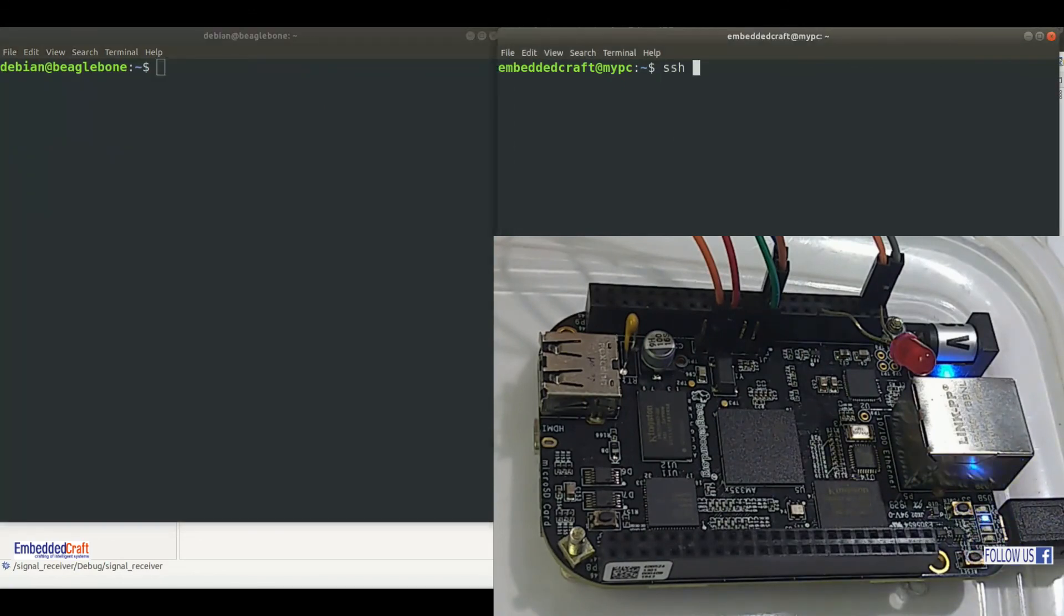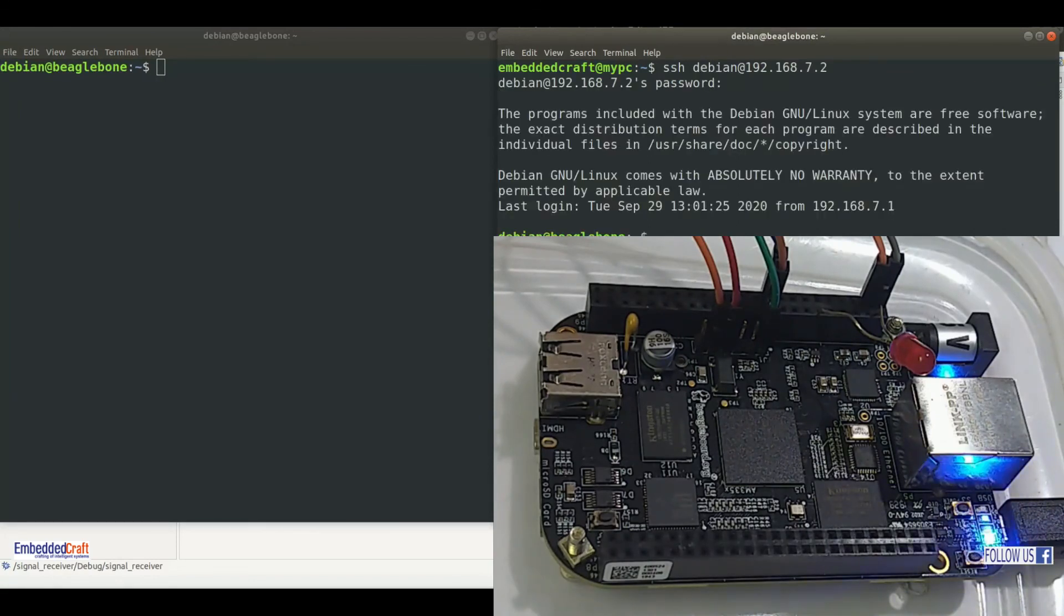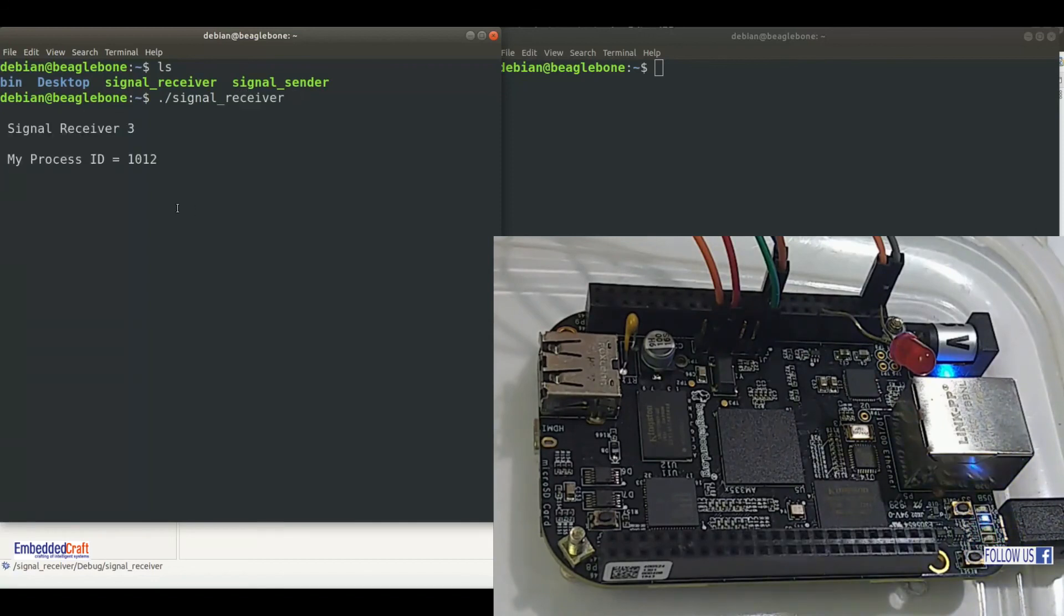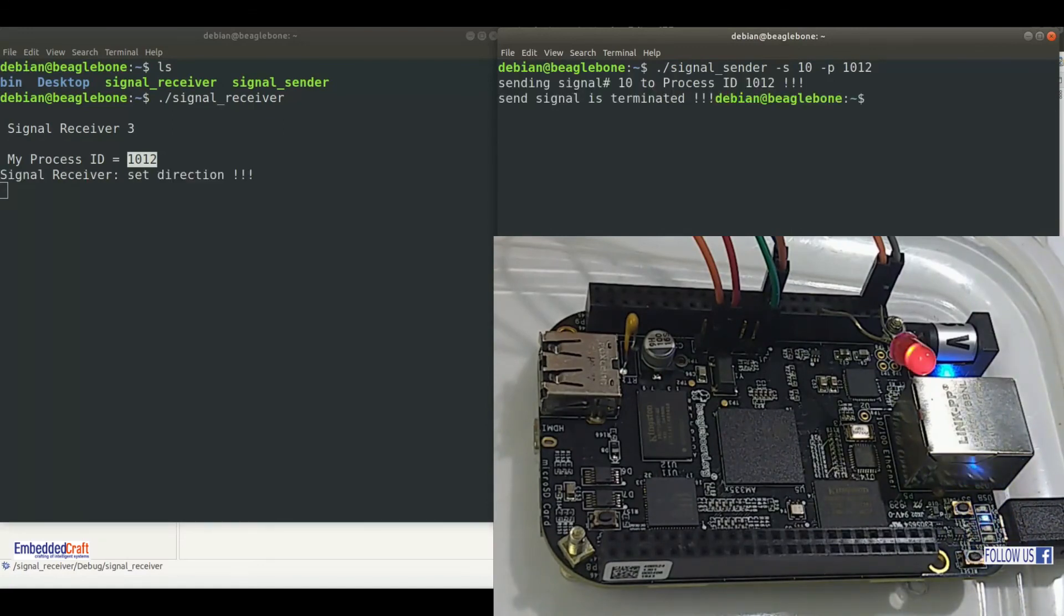Let us do SSH login in second terminal. Now we have two terminals open for our target board. In first terminal, we are running signal receiver process. 1012 is the process ID. Now move to the second terminal to run signal sender. Type signal sender, hyphen s, signal number, hyphen p, and process ID. Signal is sent. We can see LED is glowing now.